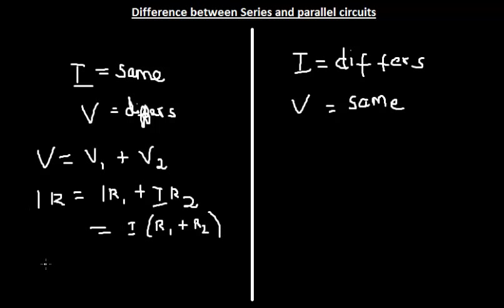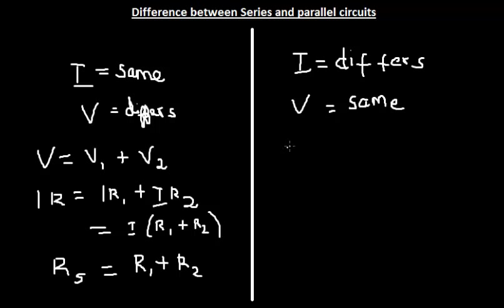Taking the current I outside as a common factor gives R1 + R2. Cancelling I on either side, you get the effective resistance in series: Rs = R1 + R2. So if you connect a number of resistors or bulbs in series, the effective resistance equals the sum of the individual resistances.